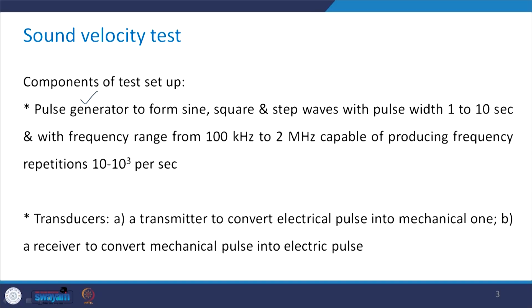The components of the test setup include a pulse generator, which can form sine, square, and step kind of waves with a pulse width of 1 to 10 seconds. It has a frequency range from 100 kilohertz to 2 megahertz and is capable of producing frequency repetitions of 10 to 10³ per second.